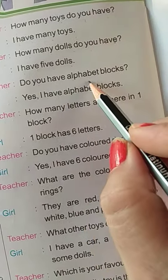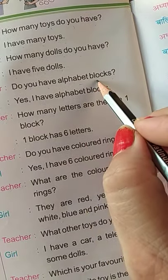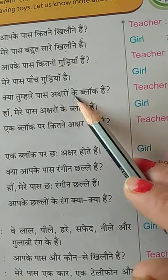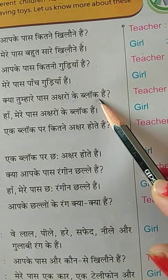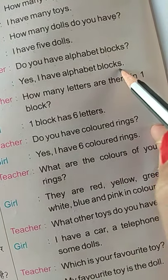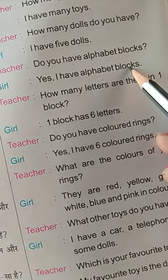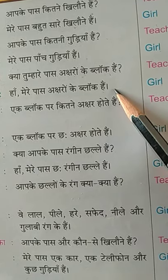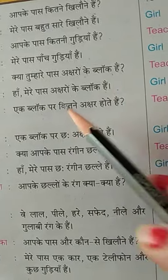Do you have alphabet blocks? Kya tumhare paas aksharon ke blocks hain? Girl says: Yes, I have alphabet blocks. Haan, mere paas aksharon ke blocks hain.